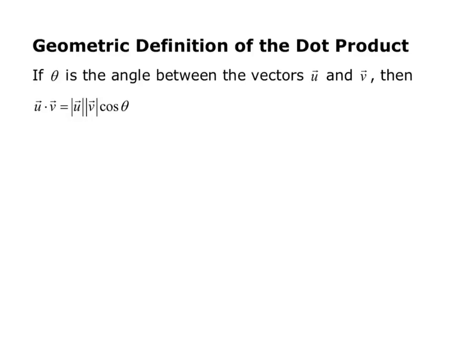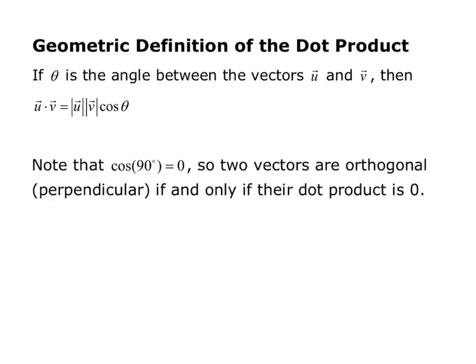So one really important fact that we use a lot is we know that cosine of 90 degrees equals zero. So two vectors are orthogonal or perpendicular if and only if their dot product is zero. So if you have a question that says, are these two vectors 90 degrees to each other, then you just take their dot product. And if the dot product is zero, then yes, they're 90 degrees to each other. If the dot product is not zero, then they are not 90 degrees.